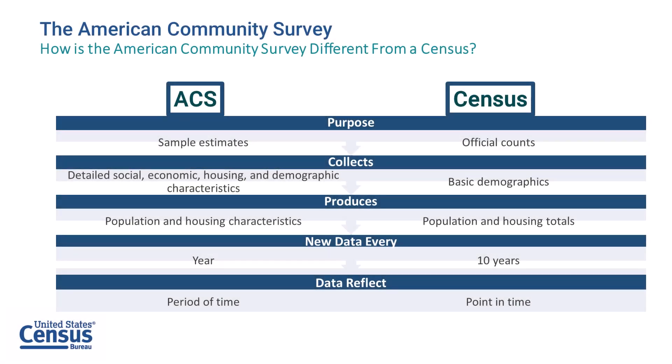Now the ACS is part of the decennial census program, but it's also different from the census. ACS estimates are based on a sample of the population, whereas the census is based on the official count of the population. The ACS collects social, economic, housing, and demographic information, whereas the census collects basic demographics. The ACS produces population and housing characteristics, whereas the census produces housing and population totals. The ACS occurs annually, reflecting a period of time averaging data for 12 months or 60 months, whereas the census occurs every 10 years and reflects a point in time — census day — which is April 1st.